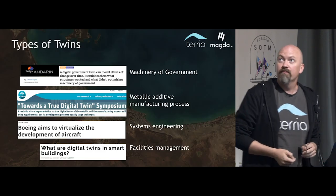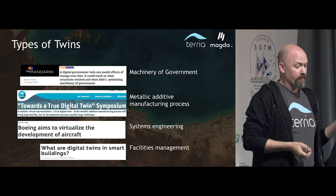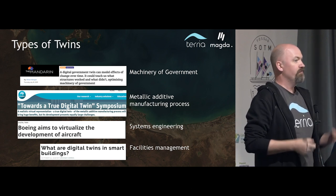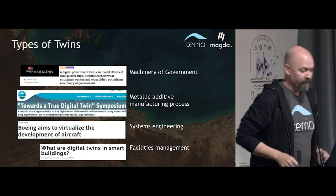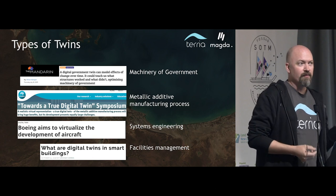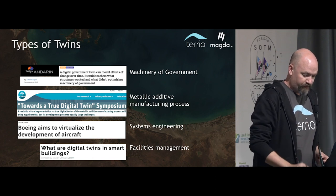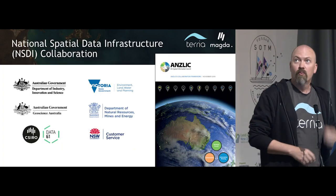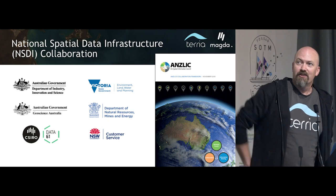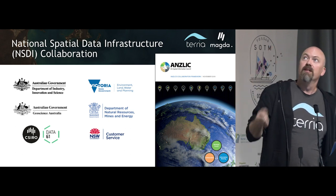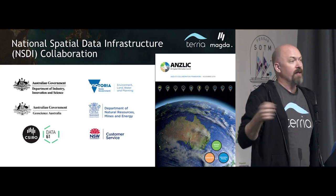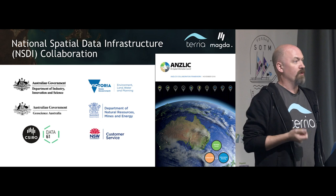There are a bunch of different types of twins. You can make a digital twin of machinery of government, how government changes after an election. You can make twins of metallic additive manufacturing, 3D printing. Systems engineering for an aircraft, facilities management — now we're starting to talk about a building. In order to define these things and figure out what we're doing, we're working in a collaboration group — the National Spatial Data Infrastructure Collaboration Group — with state government, Commonwealth government, and ANZLIC, the Australia-New Zealand Land Information Council.